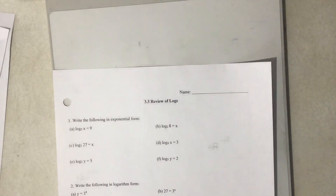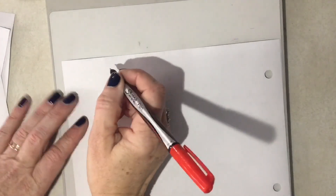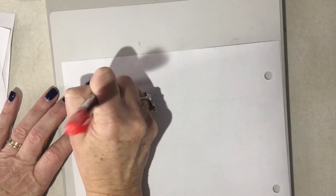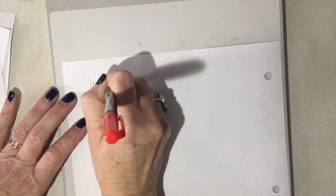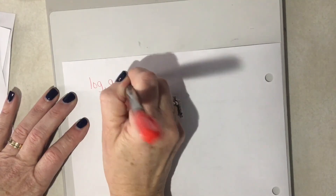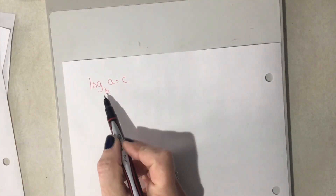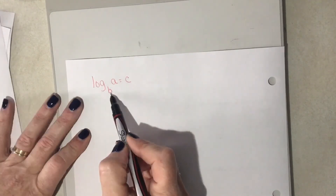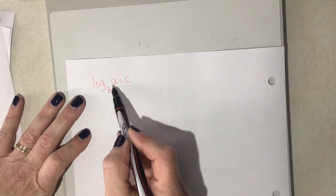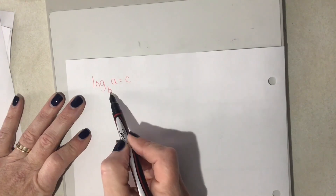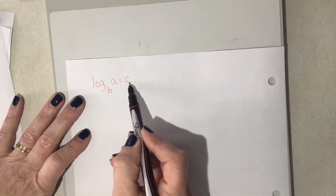Flip your paper over real fast. We're going to have a general logarithm written as log base b of a, and that's going to give me some number. That's how we write a logarithm, and it's read: log base b of a is equal to c.